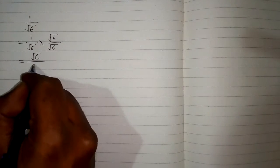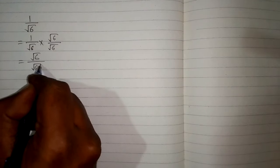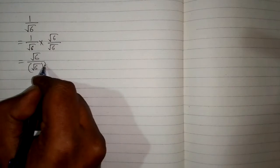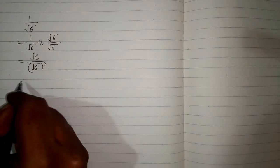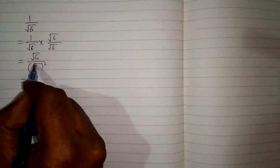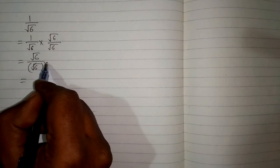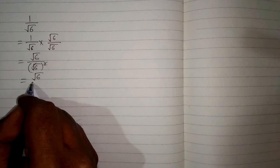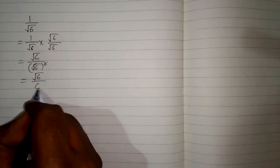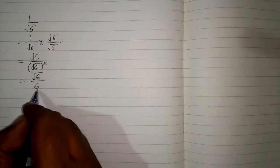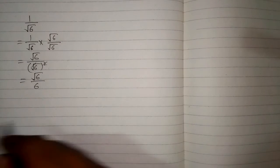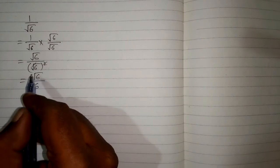That gives us the square of square root of 6. Now we can cancel this square root and square, so we have square root of 6 upon 6, and this is the required answer.